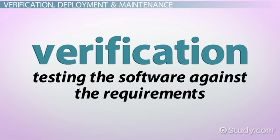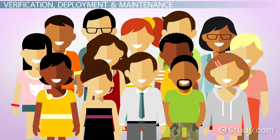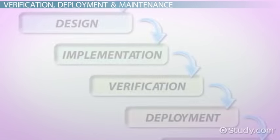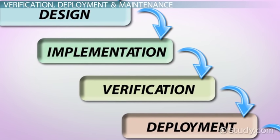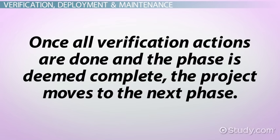The verification phase is testing the software against the requirements. During this phase, the project team may select a pilot group of users to test the software's user-friendliness or to provide user feedback. If the software does not meet the requirements in the requirements document, it is sent back to the software engineers for further implementation. Once all verification actions are done and the phase is deemed complete, the project moves to the next phase.